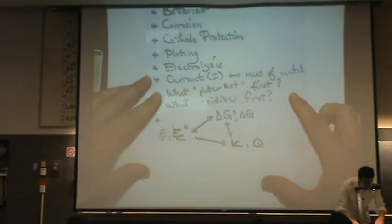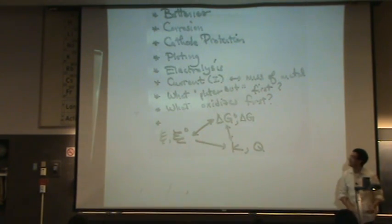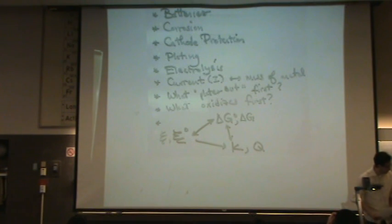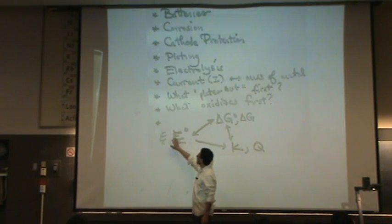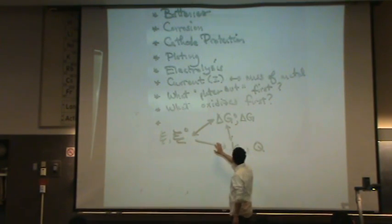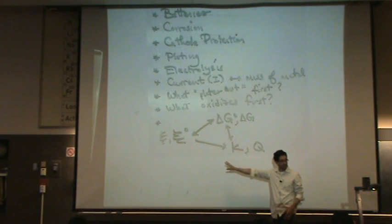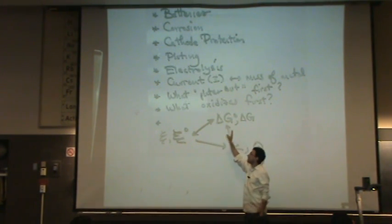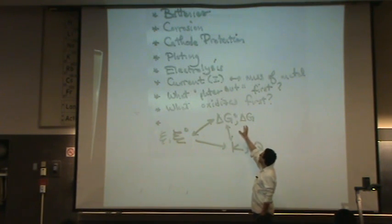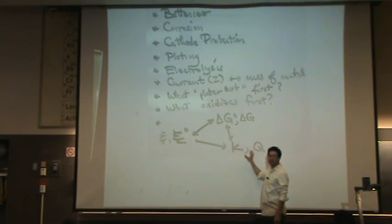And then know this trifecta here to be able to calculate between all three. So for example, if you're given E or E standard, be able to go to K or Q and vice versa, or be able to go to delta G or delta G standard, or be able to go from delta G standard to delta G to K and Q.